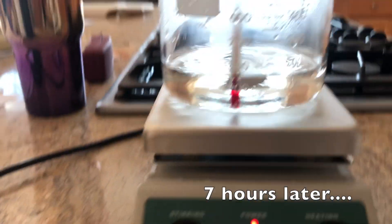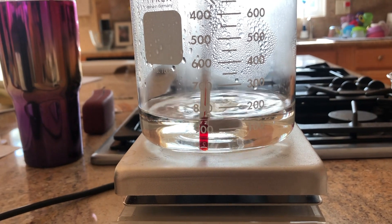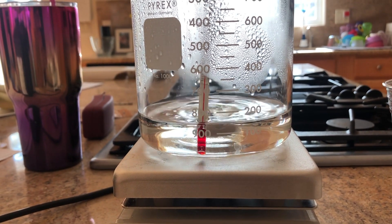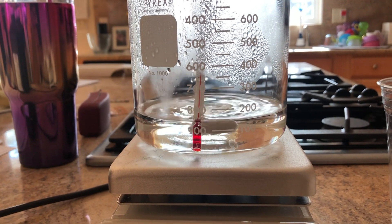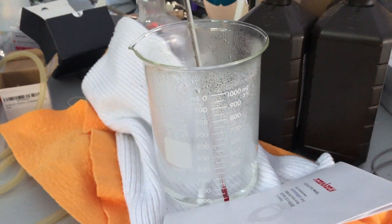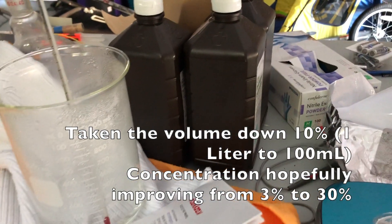Almost there. Let's stop it before we get to about 120 milliliters and then when it cools down it'll shrink a little bit more. Okay, so we've taken the peroxide down to about 10% so we're hoping it's about 30%.